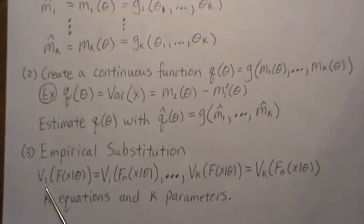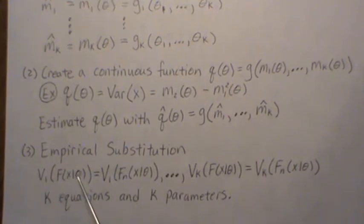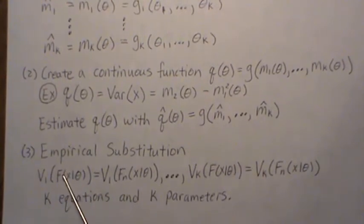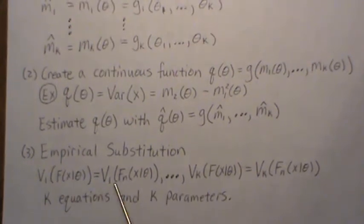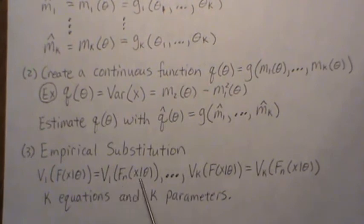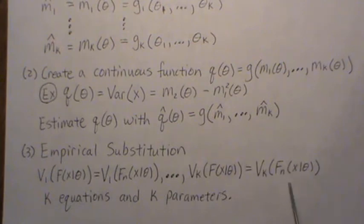This is the first moment of the population, and it's a function of the CDF. We take that same function and we set it equal to the same function but we plug in the empirical CDF. So this is the first moment, and we do that for the k. This is the kth moment, but it's a function of the CDF. We set it equal to—or we plug in the sample CDF and set them equal, and then we back solve for the parameters. This is a method of empirical substitution.